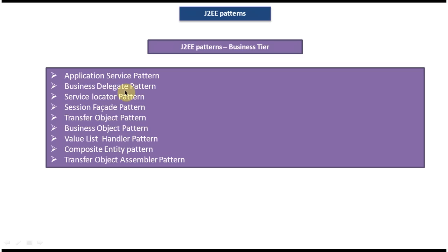The patterns under the Business Tier of J2EE patterns are: Business Delegate pattern, Service Locator pattern, Session Facade pattern, Transfer Object pattern, Business Object pattern, Value List Handler pattern, Composite Entity pattern, and Transfer Object Assembler pattern. These are all the patterns which come under the Business Tier of J2EE patterns.